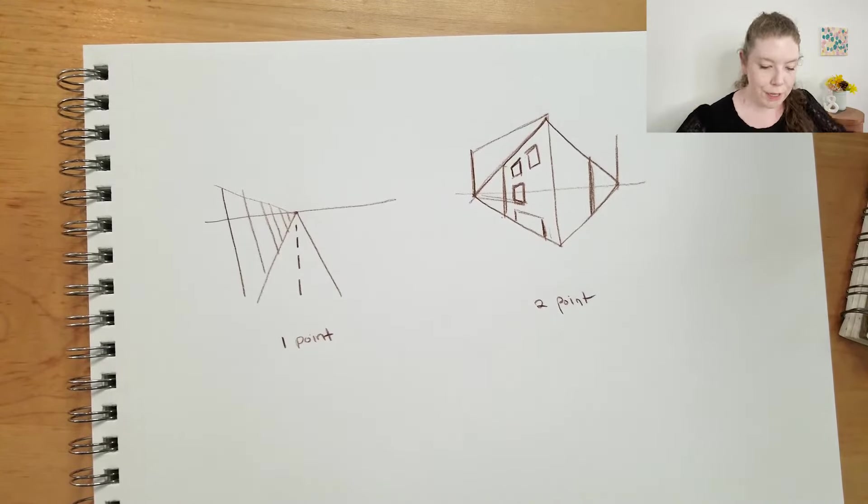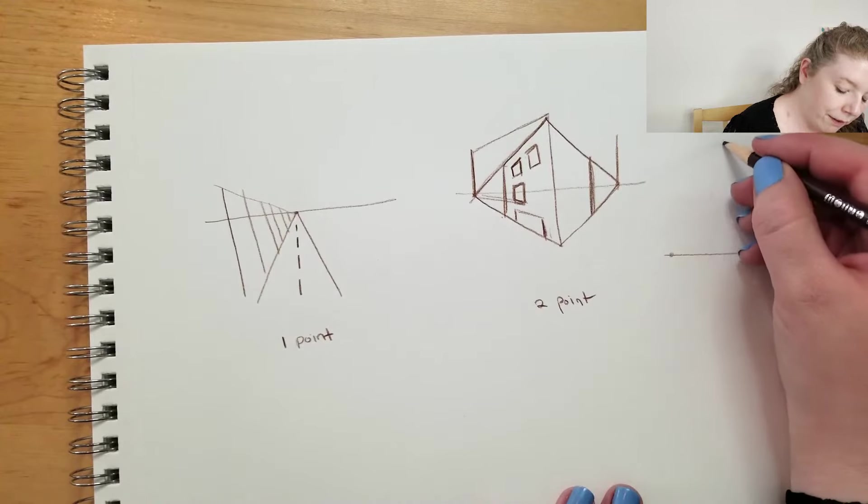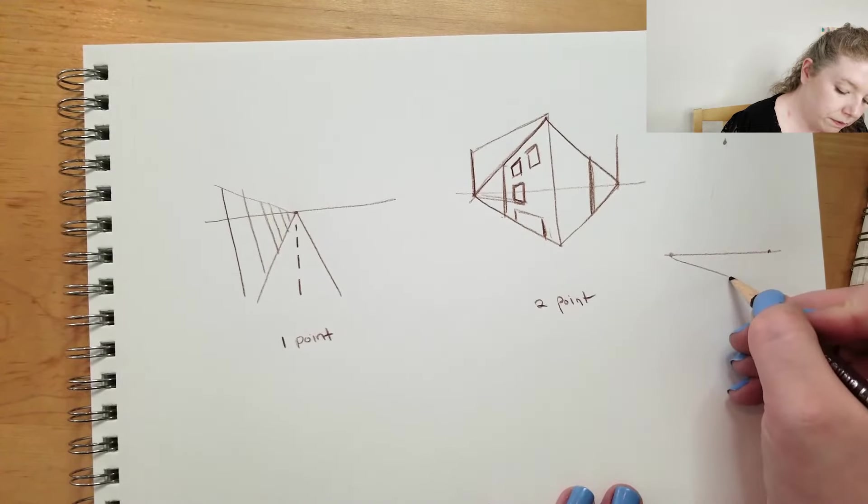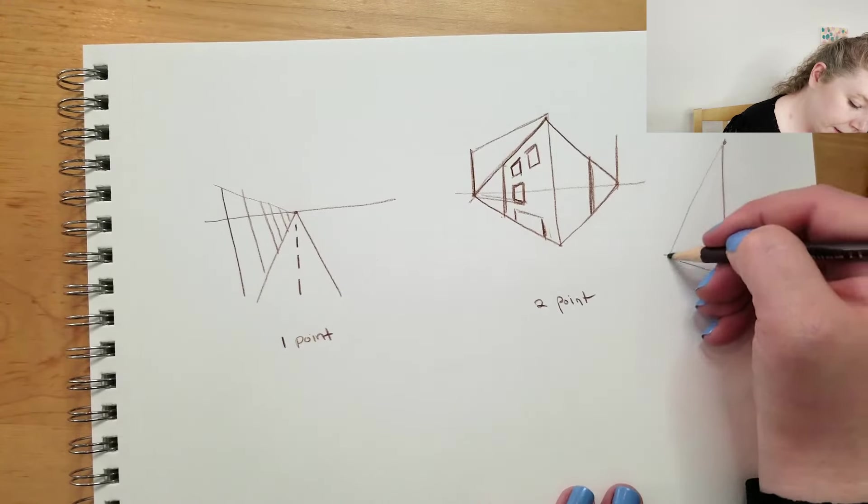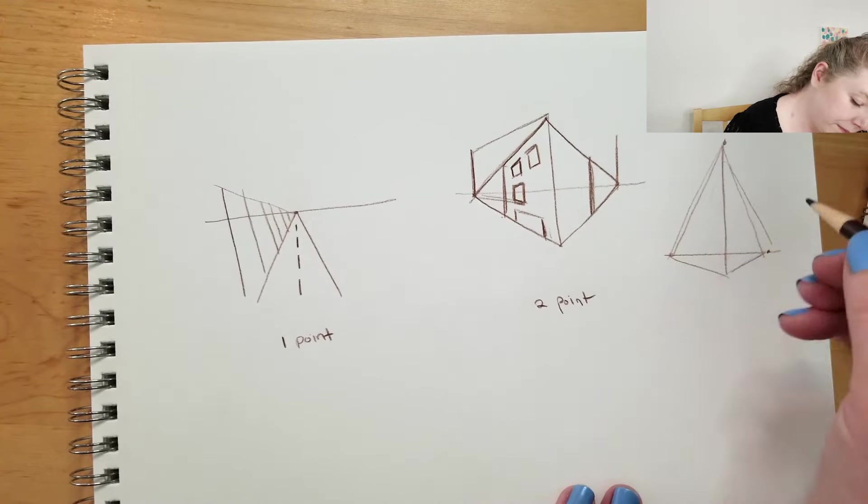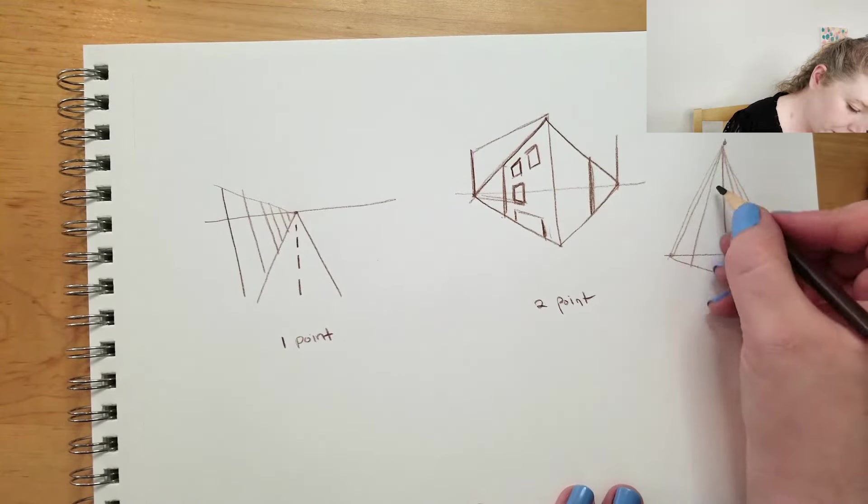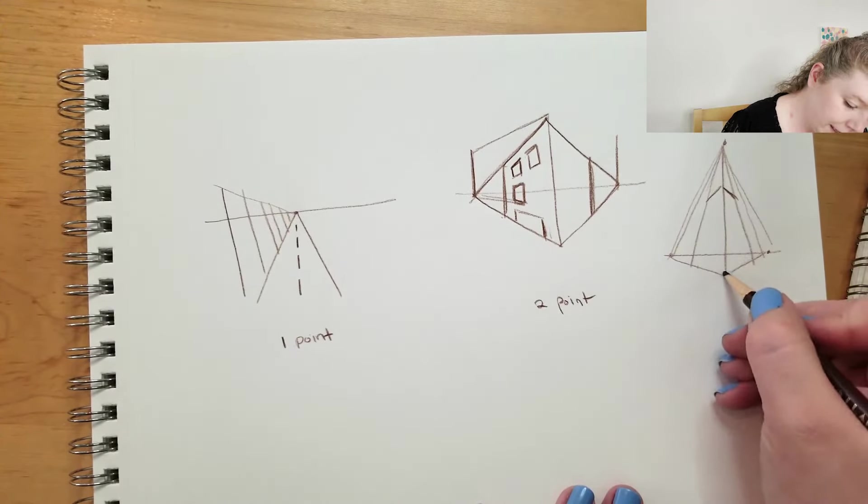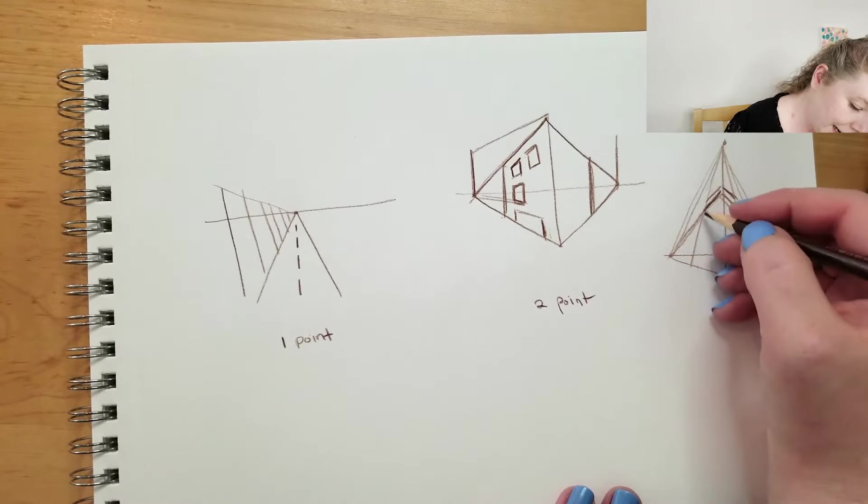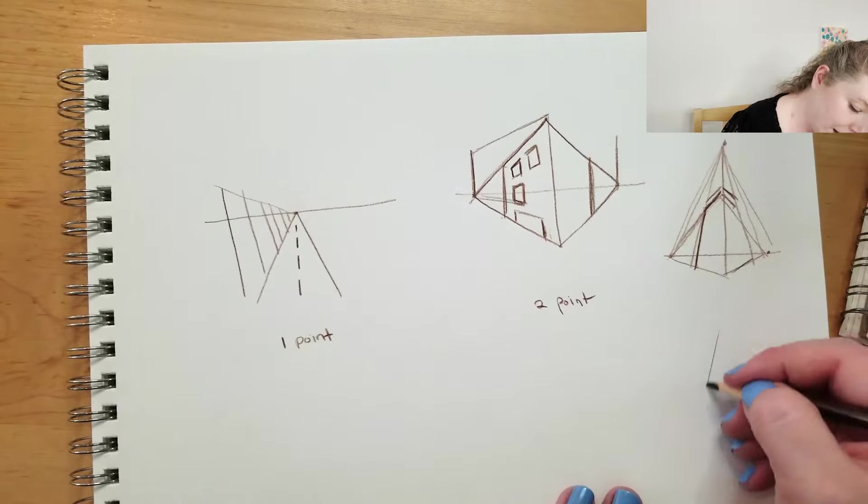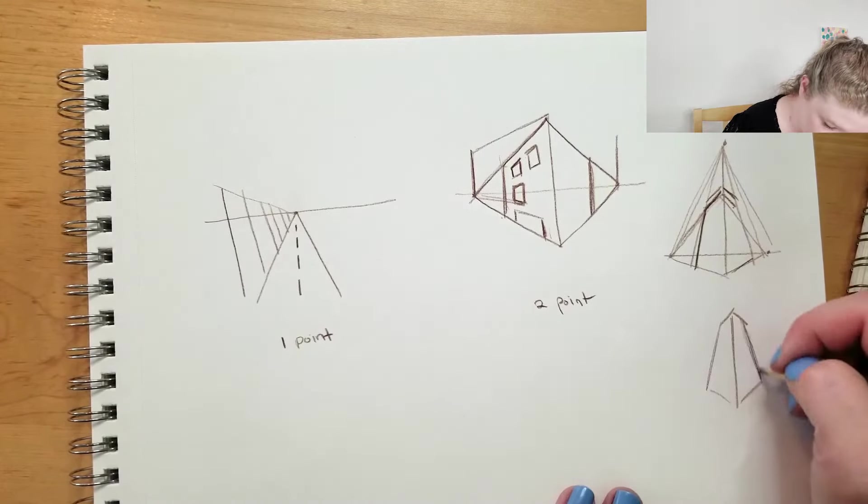Three-point perspective now means that there's three spots that everything recedes to. So we have the horizon. We have one and we have two points but now we have a third point. So let's say we're looking at a really tall building like a skyscraper. We have these points here and these points here. Now our vertical lines also are converging. So you get something kind of like this. These goes here. These go here. I know this looks kind of intense but all it means is that now instead of these lines being straight they come inward. And this gives it the super tall sort of feeling.